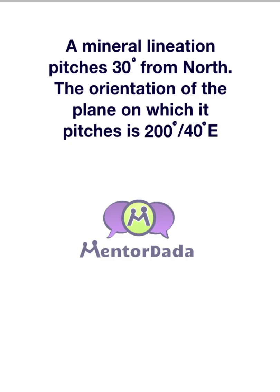A mineral lineation pitches 30 degrees from north. The orientation of the plane on which it pitches is 200 degrees slash 40 degrees east. You can pause the video to go through the sum again.